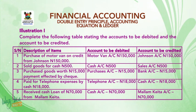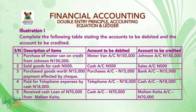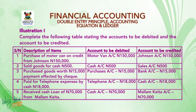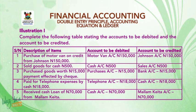Number two, sold goods for cash, 500,000. Debit cash account with 500,000 and credit sales account with 500,000. Number three, purchase goods worth 15,000, payment effected by cheque. Debit purchases account with 15,000 and credit bank account with 15,000.